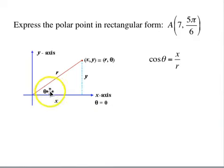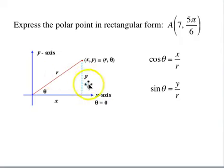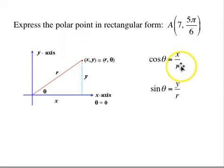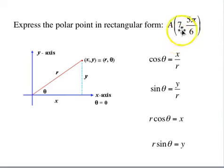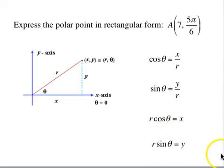Cosine of θ is adjacent over hypotenuse, so cos θ = x/r. Sine of θ is opposite over hypotenuse, so sin θ = y/r. Solving for x and y by multiplying both sides by r: r·cos θ = x and r·sin θ = y. We have r=7 and θ=5π/6, so we can convert from polar form to rectangular form.